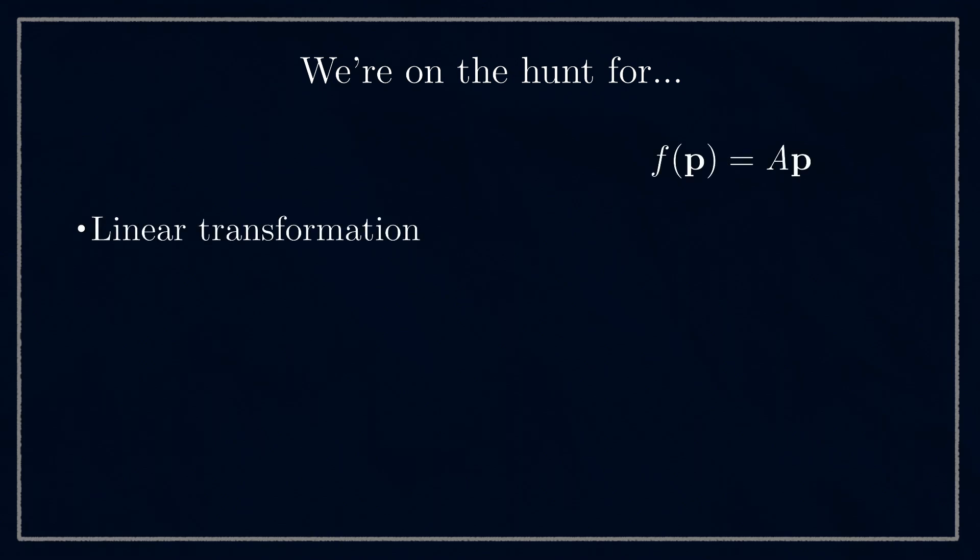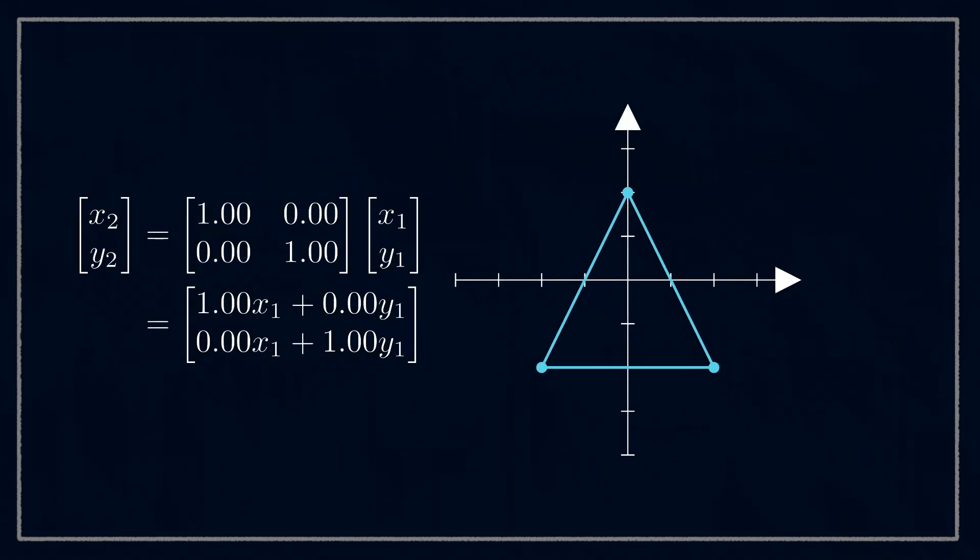So we are on the hunt to find a matrix, a linear transformation, that will rotate and translate our points in space. Let's play around and see what we can find. We've got our input triangle here in red and the result in blue, but you can't see the red one because the matrix is currently set to the identity. This means the output will be the same as the input.